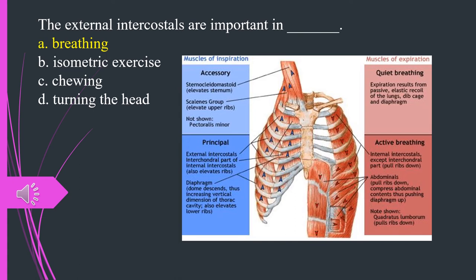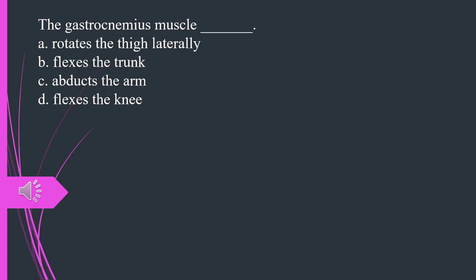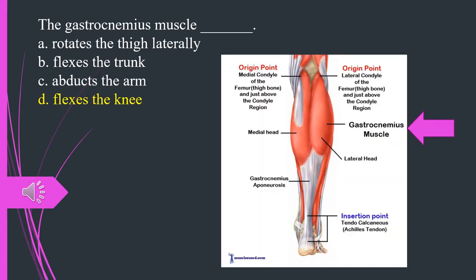The gastrocnemius muscle A. Rotates the thigh laterally. B. Flexes the trunk. C. Abducts the arm. D. Flexes the knee. The answer is D. Flexes the knee.